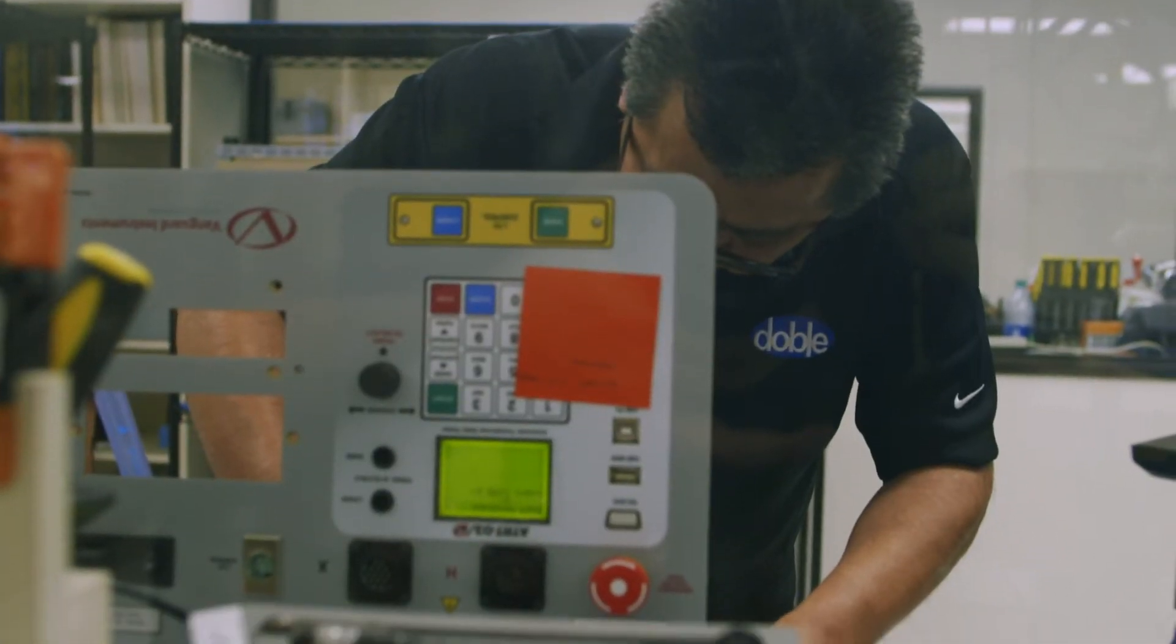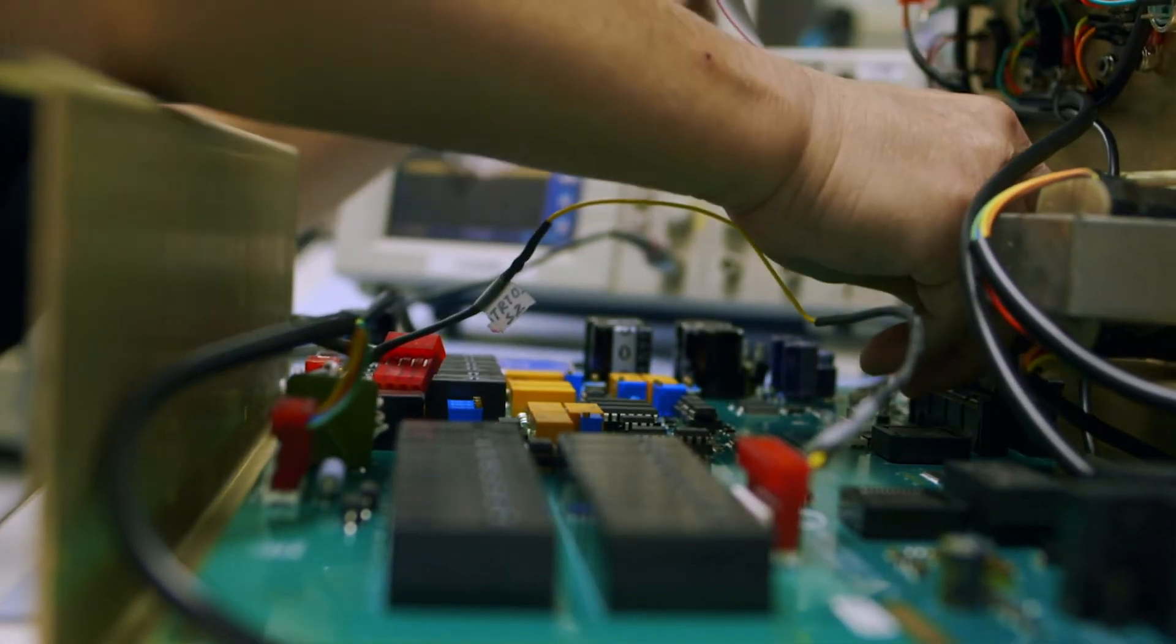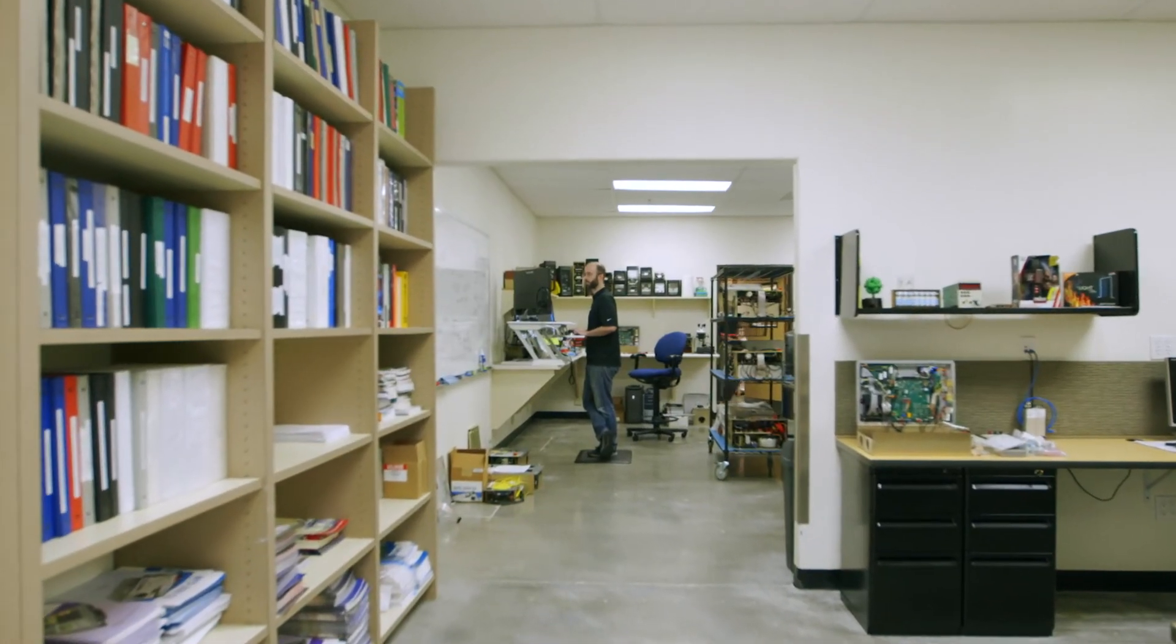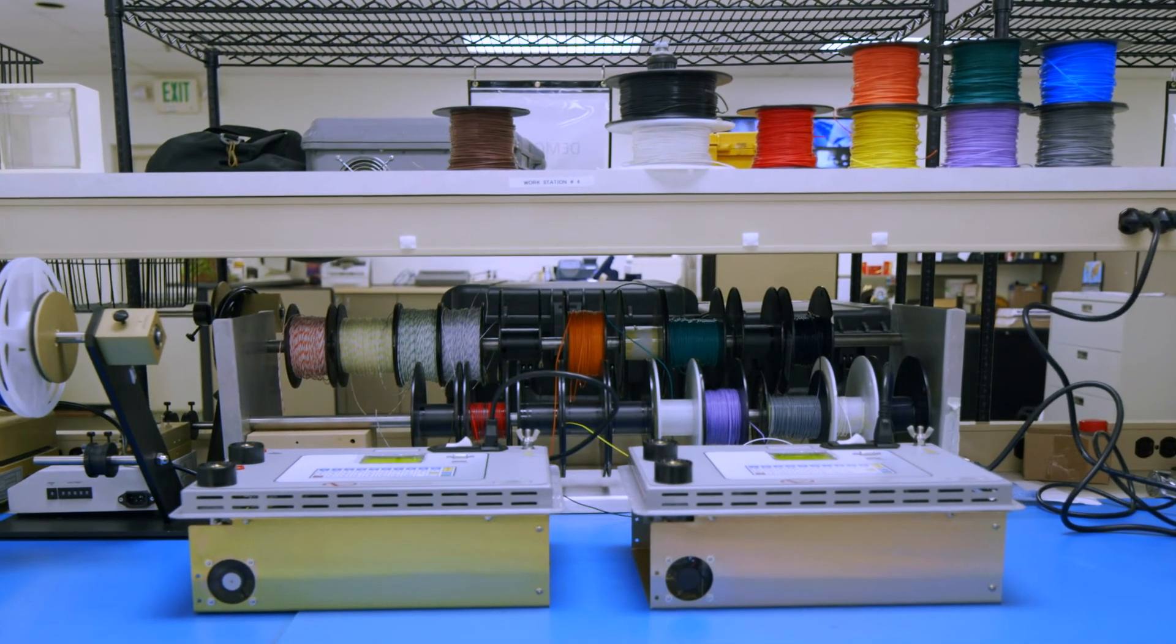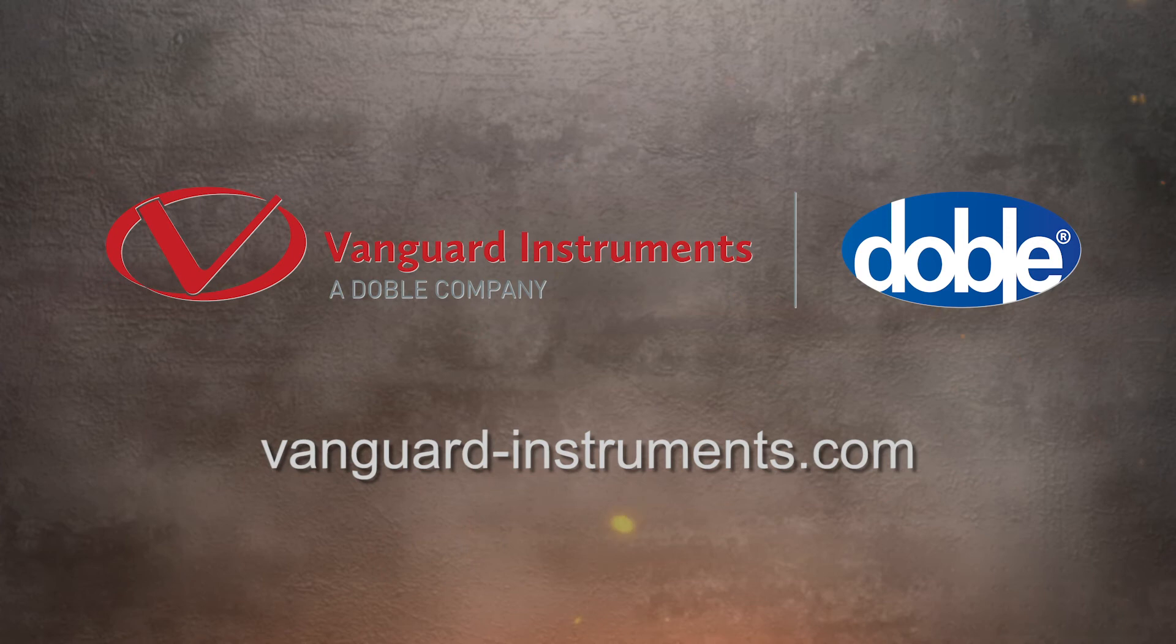Come visit them online and discover for yourself why partnering with Doble Engineering Company makes sense and gives companies around the globe peace of mind by protecting their energy assets. Visit them at Vanguard-Instruments.com. This is John Criswell for Manufacturing Marvels.